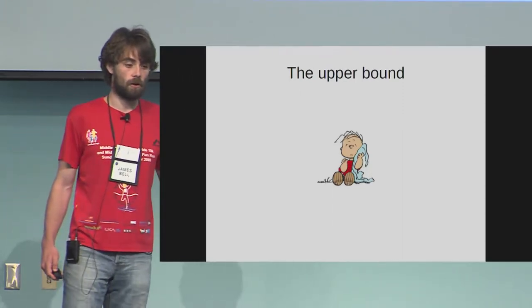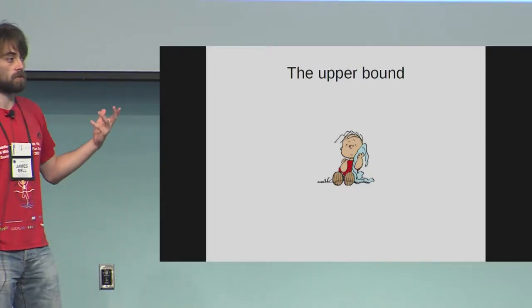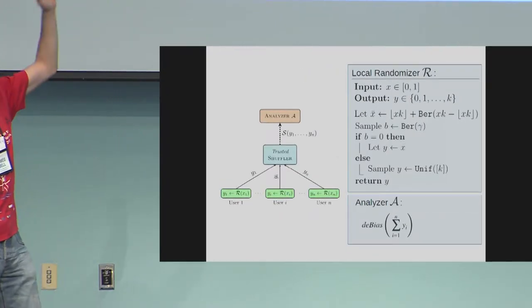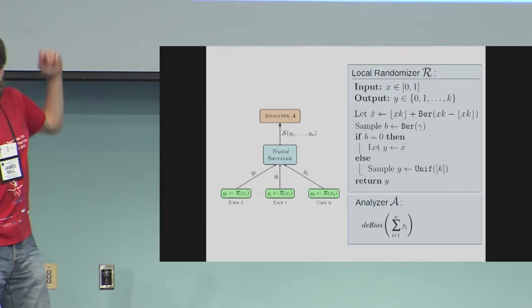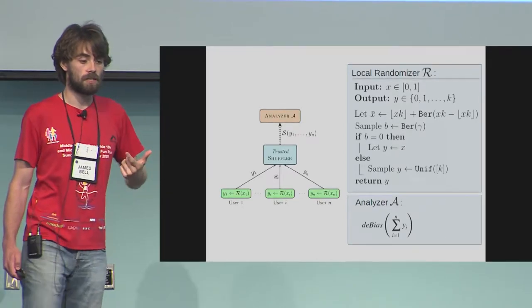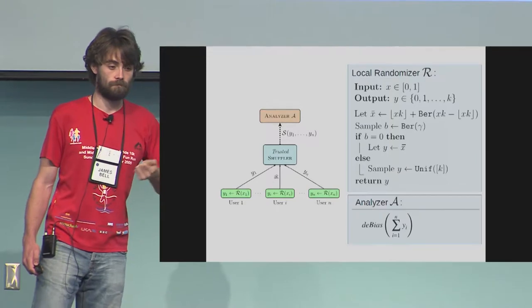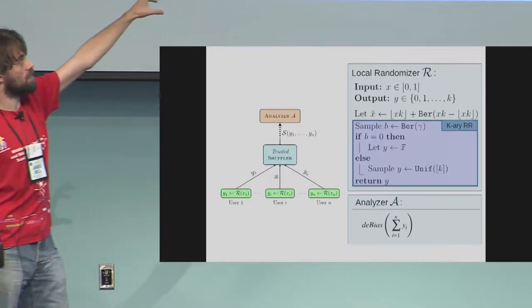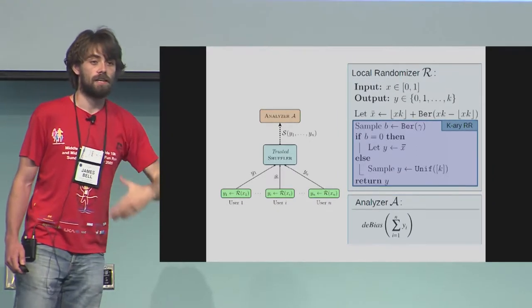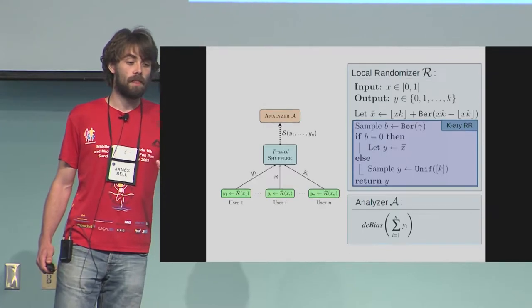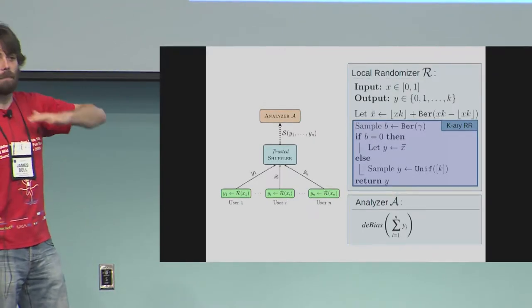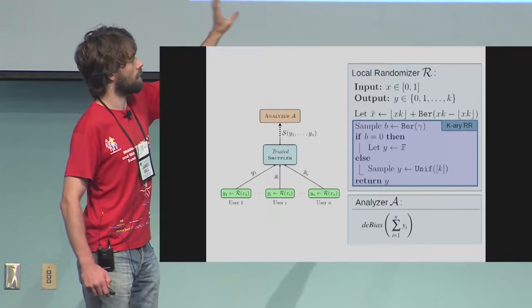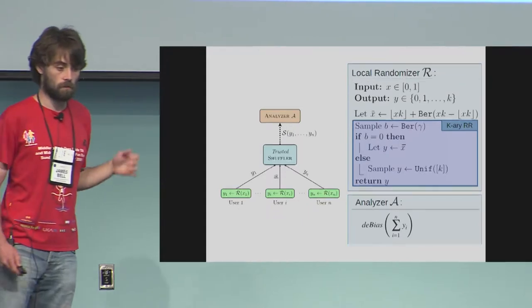I'm going to prove the upper bound. I'd like to explain how these protocols work and how you can get this accuracy in the one-message shuffle model. This is our local randomizer — it's pretty simple with only two things going on. You take your input and put it into fixed-point precision: this is randomized rounding to one of k precision levels. After that, we do k-randomized response, meaning each person flips a biased coin and with probability gamma returns a uniformly random answer independently of their input, and with probability one minus gamma they just tell the truth. At the end, the analyzer de-biases this via a straightforward linear map.